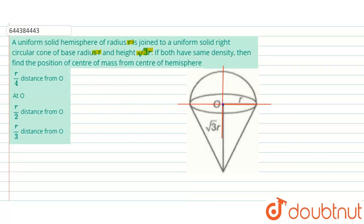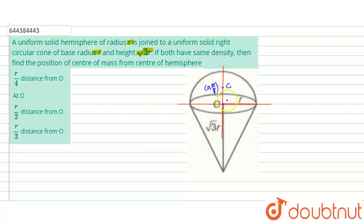From the origin we will find the center of mass of this combined solid. For this hemisphere, if it has a uniform mass density, its center of mass is at c1, and this distance is simply 3r/8. So the coordinate of this point is (0, 3r/8), where r is the radius of the hemisphere.